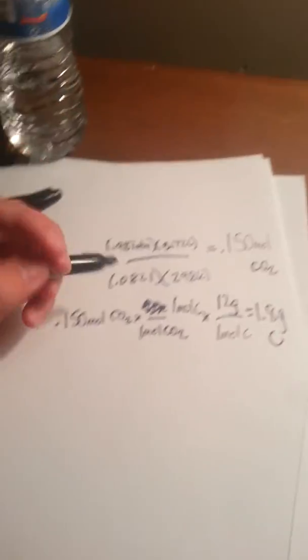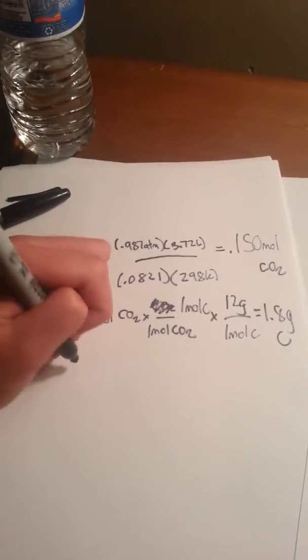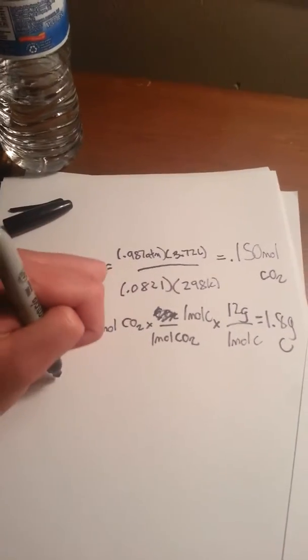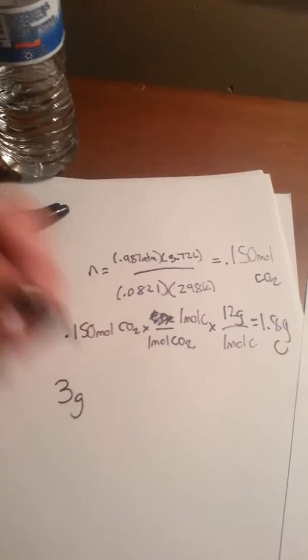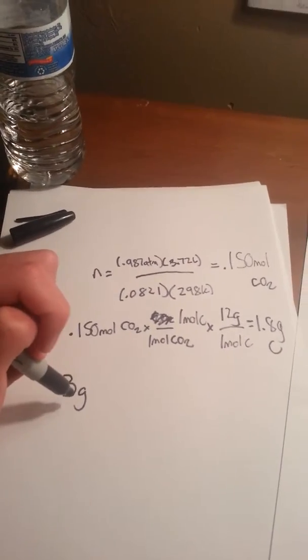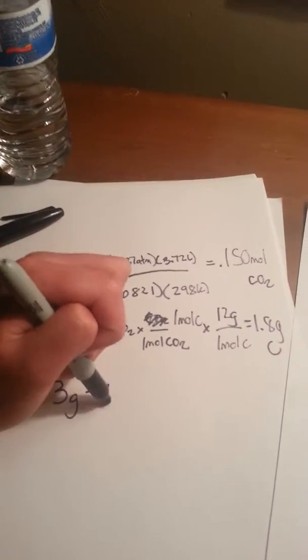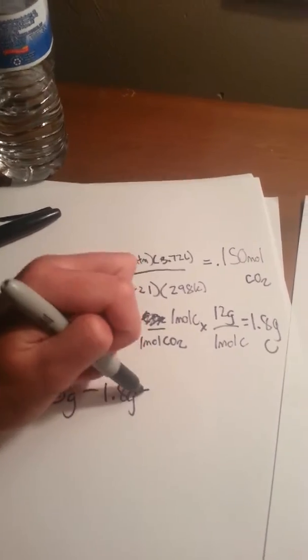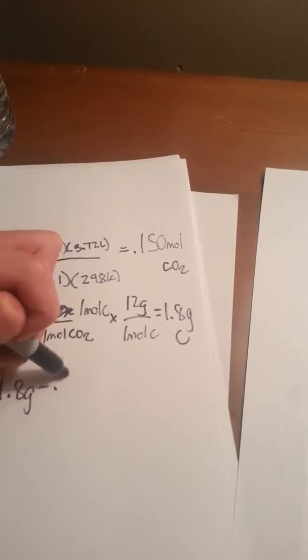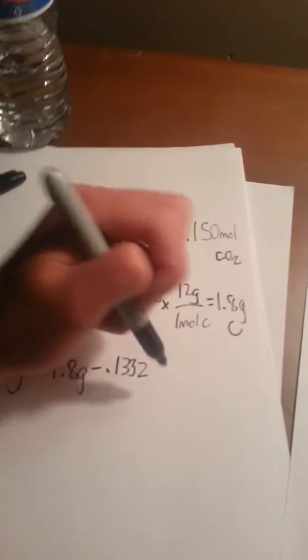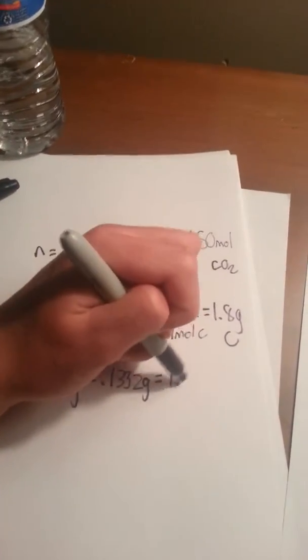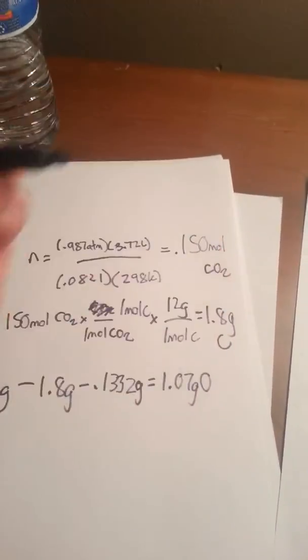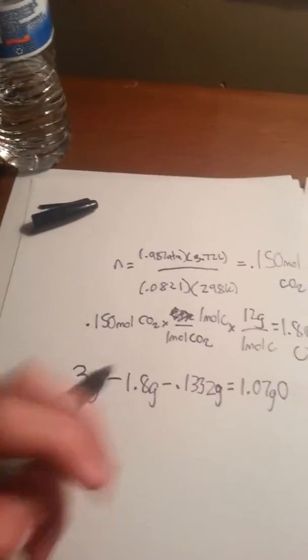All we have left to find is oxygen. This is easy - we can just take the total sample, 3 grams, which is made up of the three elements, and subtract the other two. That gives us 1.07 grams of oxygen. So there, we found all the elements. That's the end of that one.